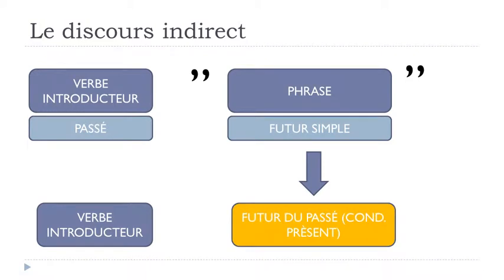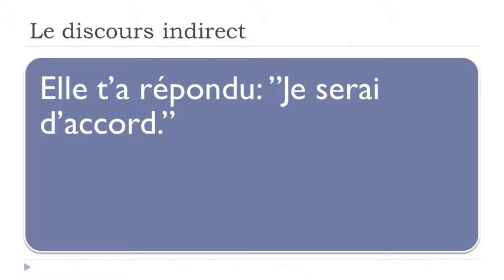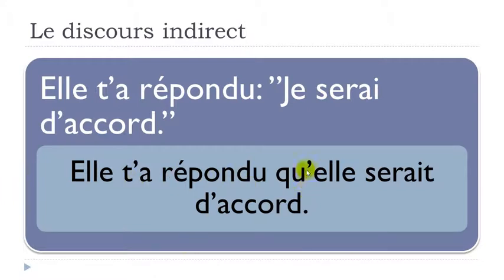Now if we've got the futur simple in the second part, it will become what we call futur du passé, but technically it's the conditionnel présent. So for example: 'Elle t'a répondu, je serais d'accord' — here 'je serais' is the future form — becomes 'elle t'a répondu qu'elle serait d'accord.' This form is the conditionnel présent.